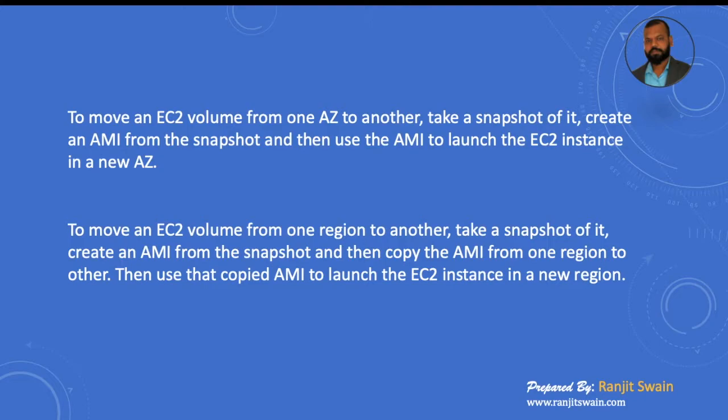Similarly, to move an EC2 volume from one region to another region, first take the snapshot and create an image out of that, then copy that image from one region to another region, and then create the EC2 instance from that AMI.